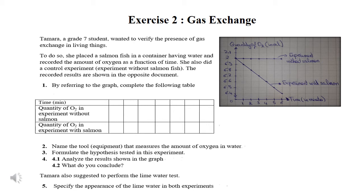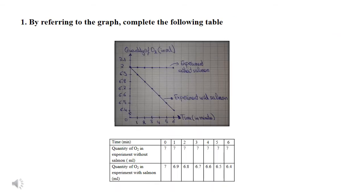Number 1. By referring to the graph, complete the following table. Let's see the table. We have time in minutes, quantity of oxygen in the experiment without salmon, and the quantity of oxygen in the experiment with salmon. In this question, we are converting the graph into a table. So, let's start with time. The time on the graph is on the x-axis. So, let's see, the two curves start at time zero, then at time one, two, three, four, five, and finally time six.